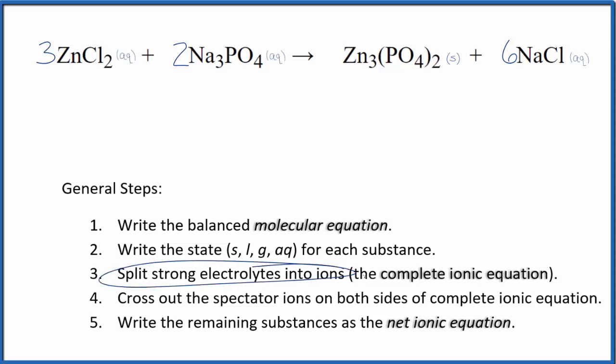Now we can split the strong electrolytes into their ions. Zinc will be two plus and the chloride ion is one minus each. So I have three of these zinc ions, and then I have three times two, so I have six chloride ions.